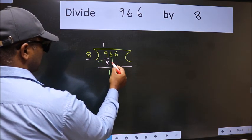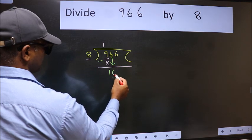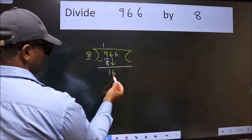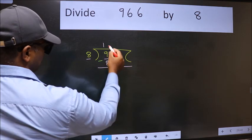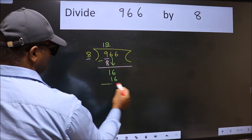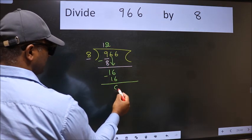After this, bring down the beside number. So, 6 down. 16. When do we get 16 in 8 table? 8 times 2 is 16. Now we subtract. We get 0.